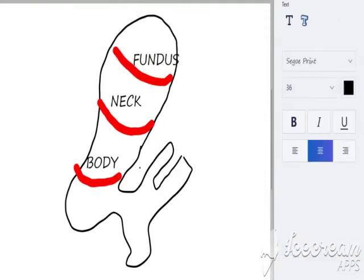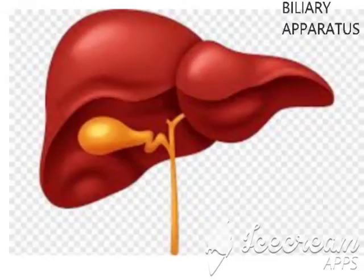The last part is the body of the gallbladder, which lies under the cover of the liver anteriorly, but is also in contact with the transverse colon inferiorly and the duodenum posteriorly. Now we will discuss about the biliary apparatus. First, the liver synthesizes bile but does not store it, and bile goes through the common hepatic duct.